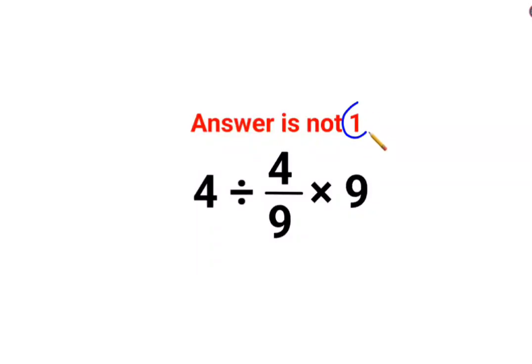Welcome everyone. So yes, the answer for this one is not supposed to be 1 because we have 4 divided by 4 upon 9 multiplied by 9.